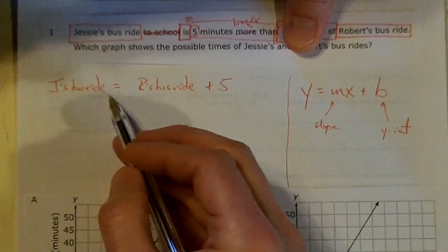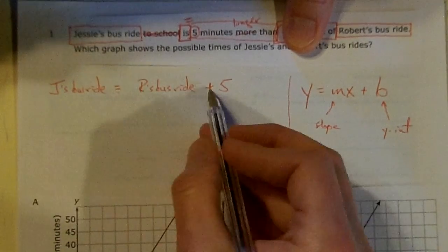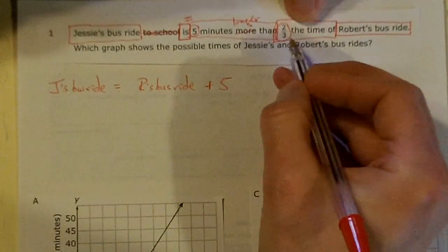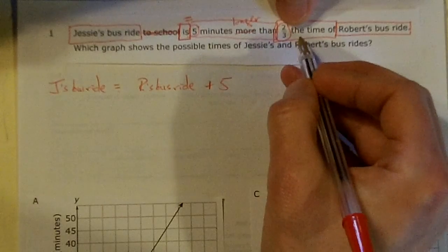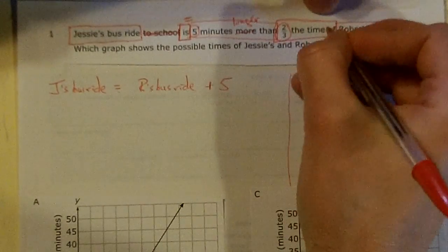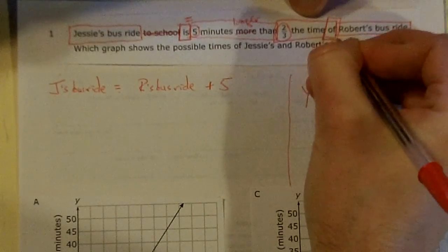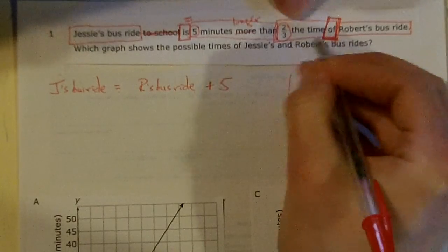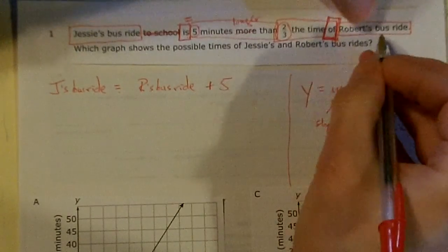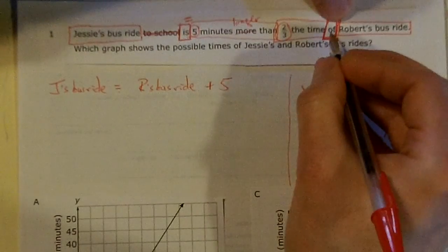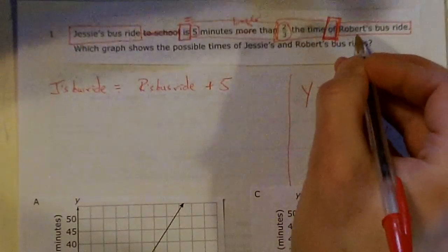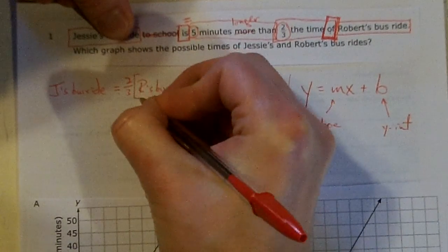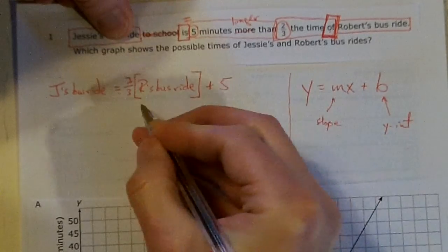Now let me do something with 'two-thirds the time of Robert's bus ride.' I remember that in math problems, 'of' very often means multiply. So two-thirds of Robert's bus ride means two-thirds times Robert's bus ride. Let me put that into the algebraic equation: two-thirds times Robert's bus ride, plus five.